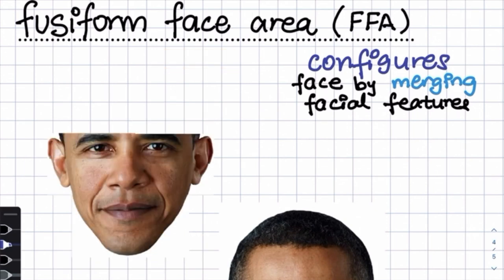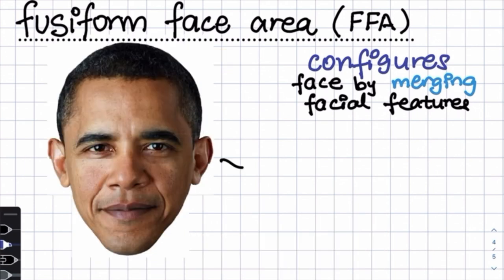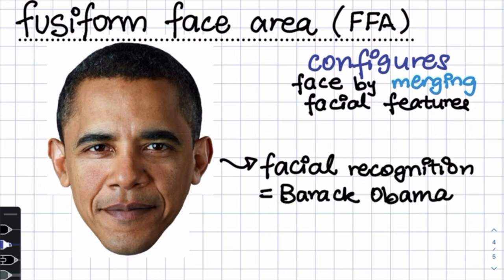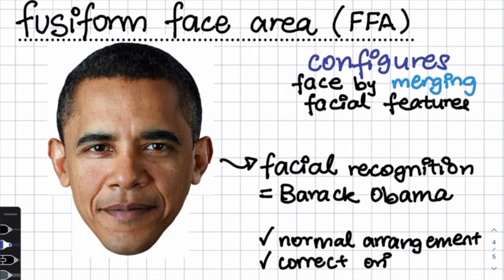From the OFA, the visual information is then transmitted to the fusiform face area, which constructs a facial identity by configuring features from occipital interpretation. The layout of features is important because the FFA only responds to faces in the normal arrangement and with the correct orientation.